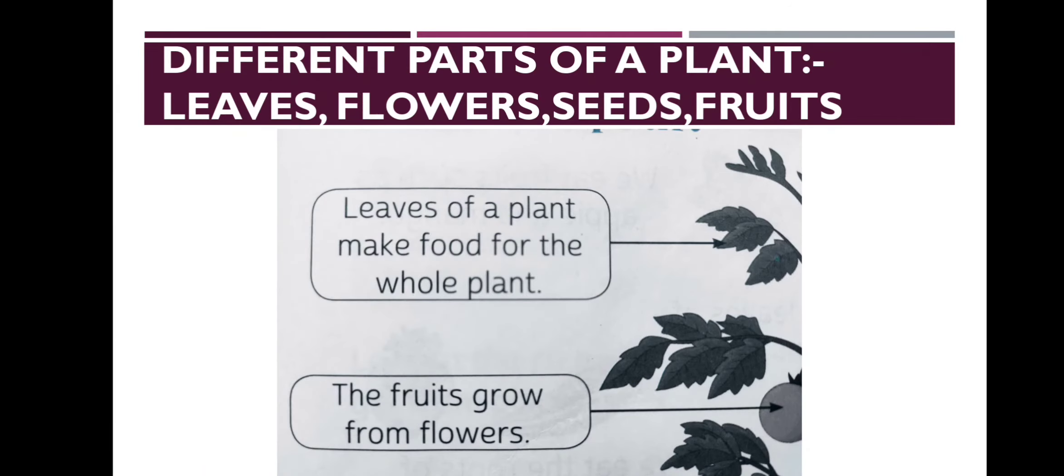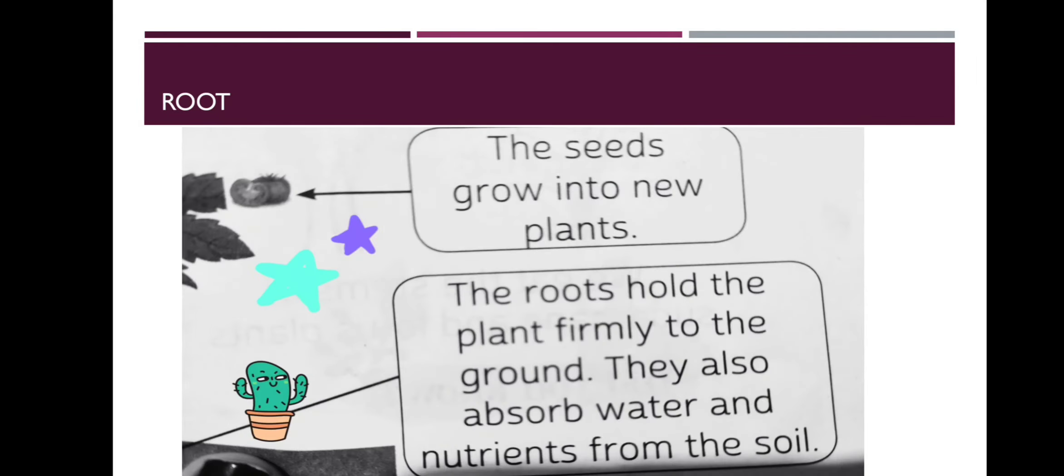Now we will discuss the function of root. Root holds the plant firmly to the ground. If the plant is standing through stem, it's just because of the roots. They also absorb water and nutrients from the soil.